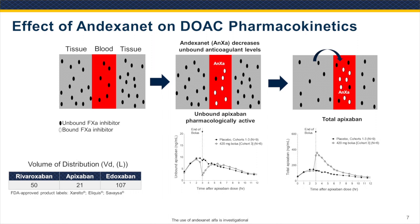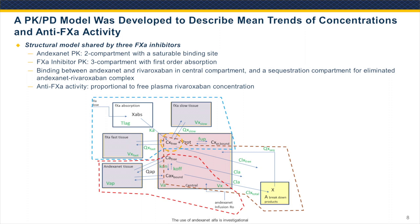Using the data from these Phase II studies, we put together a PKPD model — a quite complicated model. The reason it's complicated is you have the pharmacokinetics of two separate molecules, one of which affects the PK of the other. The dotted red line shows the andexanet distribution, which after IV administration to the central compartment is also distributed to a tissue compartment. The blue line shows the distribution for the factor Xa inhibitors, absorbed after oral administration into the central compartment as well as two tissue compartments — one rapidly distributing and one slowly distributing.